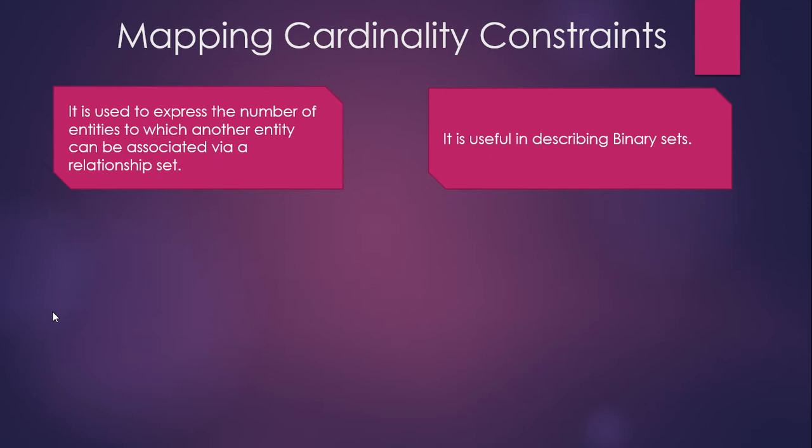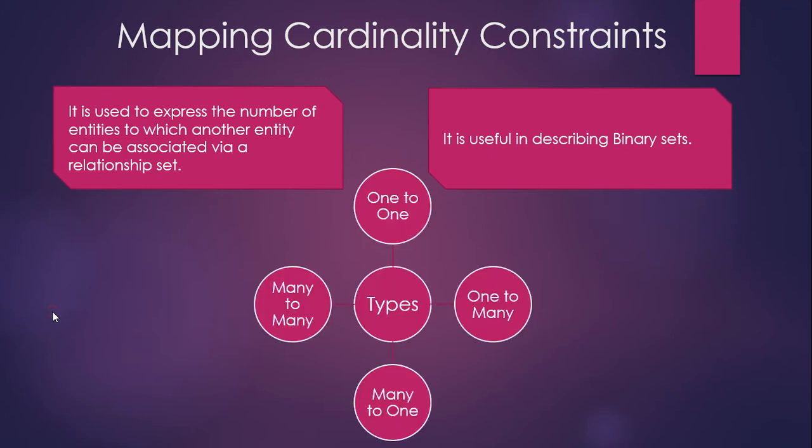The next topic related to mapping constraints is: how many types of mapping constraints are there, and into how many parts are they divided? Mapping constraints are divided into four parts: one-to-one, one-to-many, many-to-one, and many-to-many.